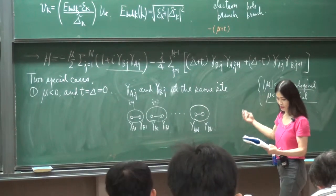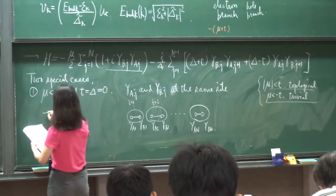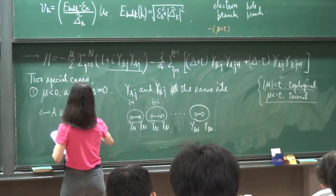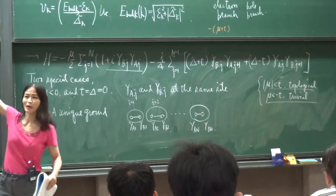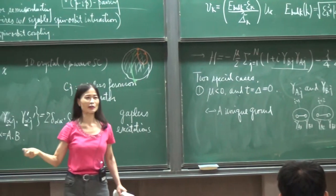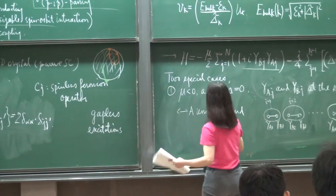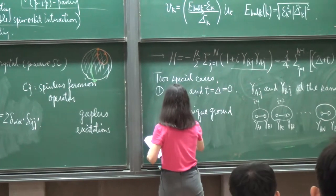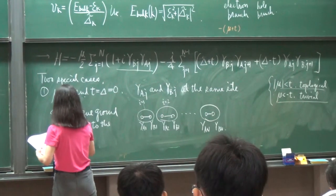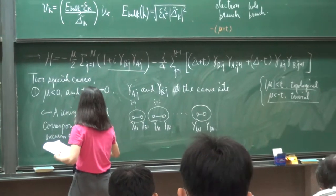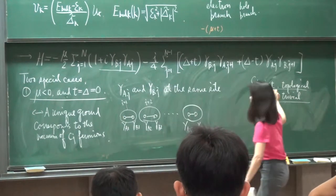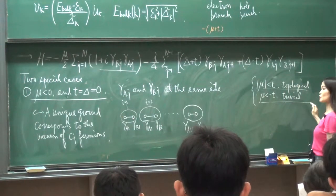So you have gamma_A and gamma_B at the same site — this is the ground state of gamma fermions. This is a unique ground state. This is totally trivial — I break each particle apart and put them back together. So it's entirely trivial, consistent with what I predicted before.